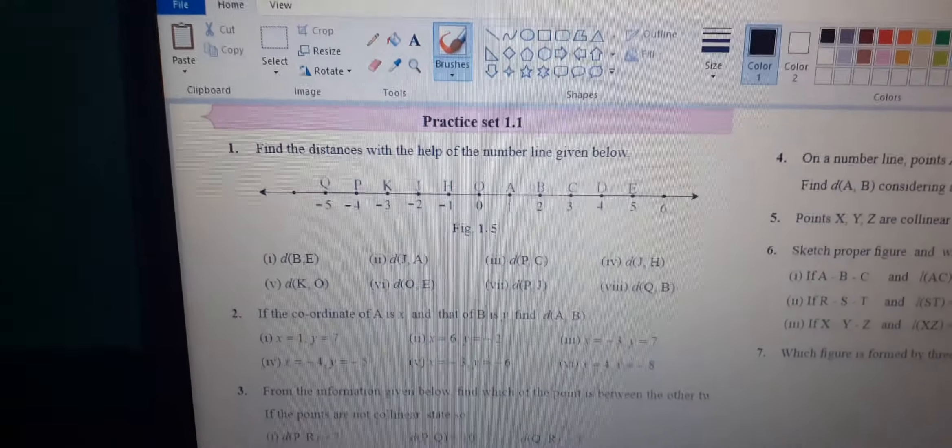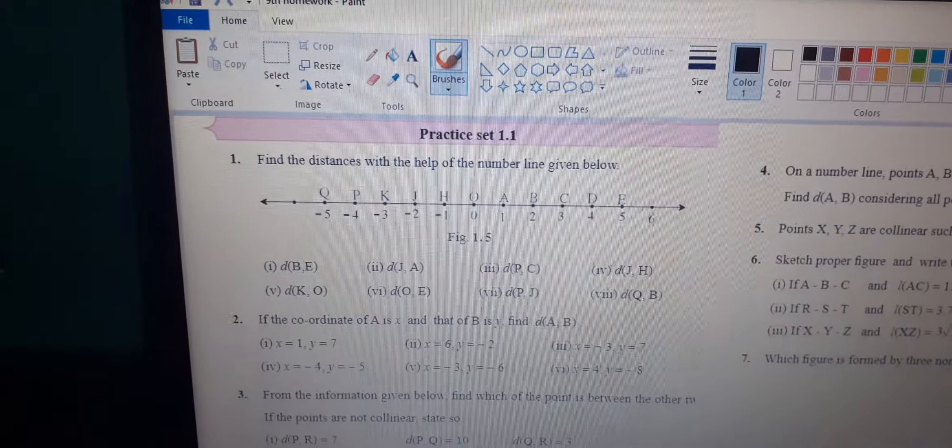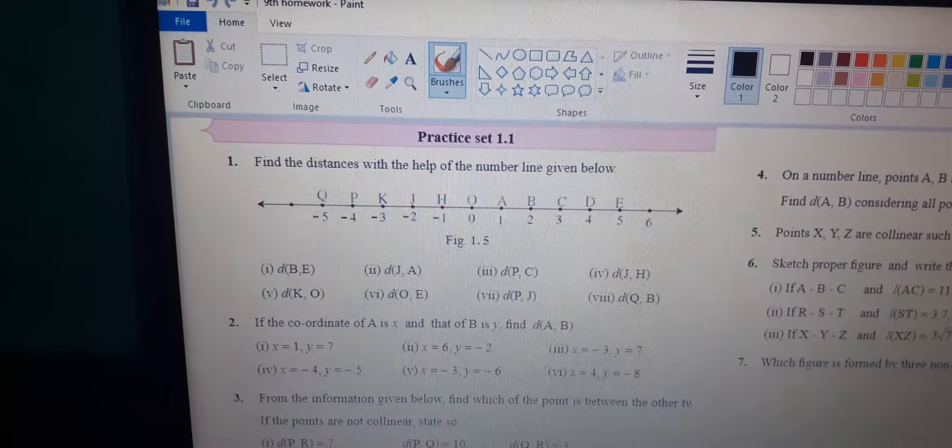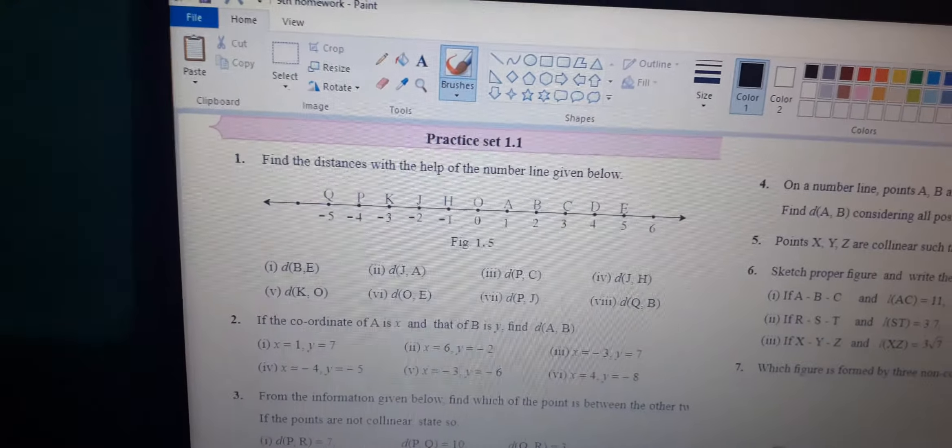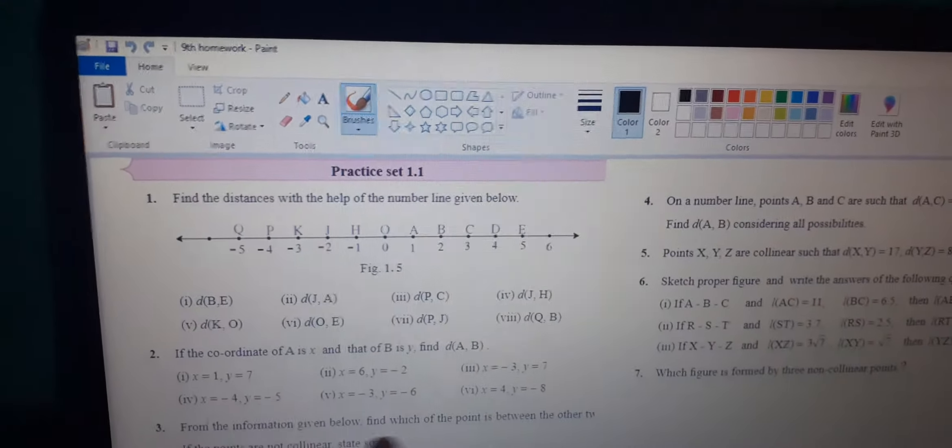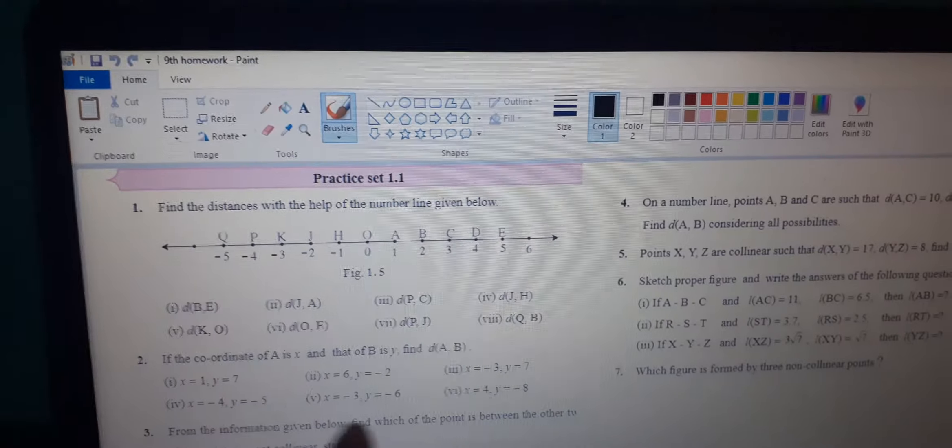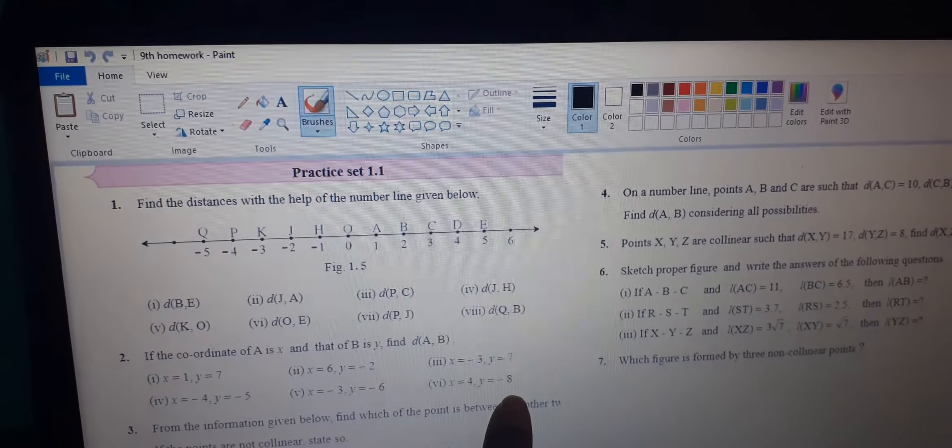If the coordinate of A is X and B is Y, find distance AB. First, X value is 1, Y value is 7. Last question: X value is 4, Y value is minus 8.